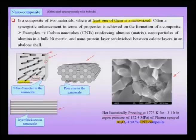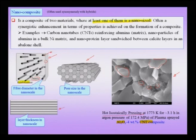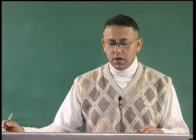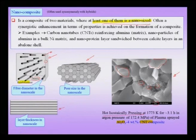In this sample you can see carbon nanotubes — typically multi-walled carbon nanotubes — reinforcing a polycrystalline alumina matrix. The alumina grain size is typically of the order of microns, so the alumina is not nano structured; it is only the carbon nanotubes in the reinforcement which are nano structured. This satisfies our condition to call it a nano composite, because at least one of the phases is in the nano scale.